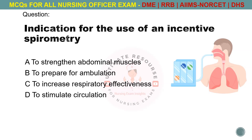Indication for the use of an incentive spirometry. Options are A. To strengthen abdominal muscles, B. To prepare for ambulation, C. To increase respiratory effectiveness, D. To stimulate circulation. The answer is C. To increase respiratory effectiveness.